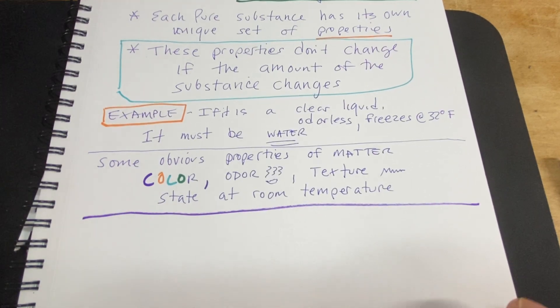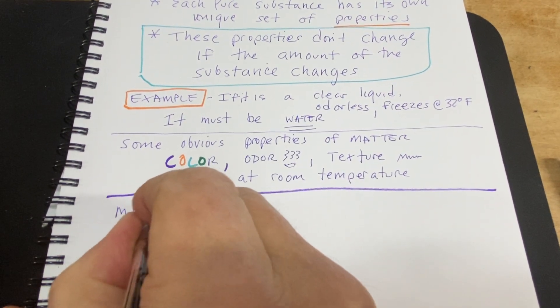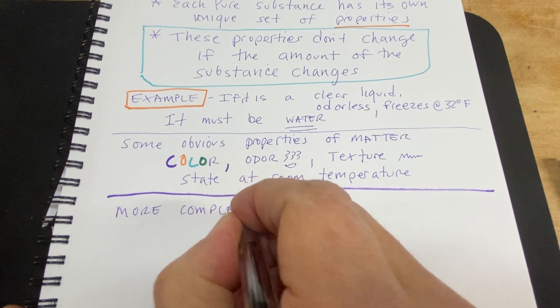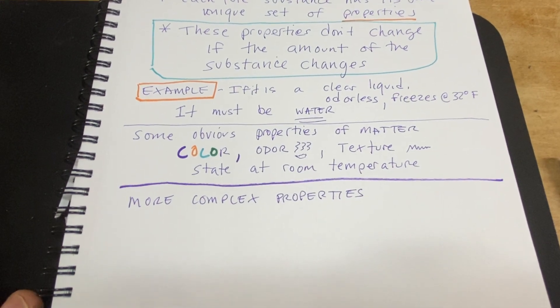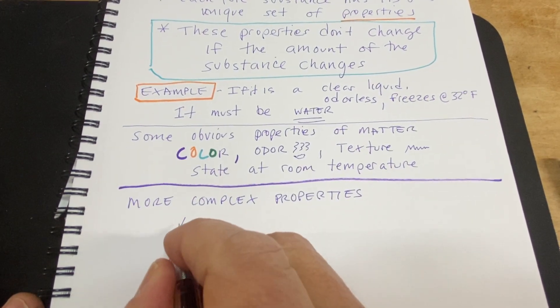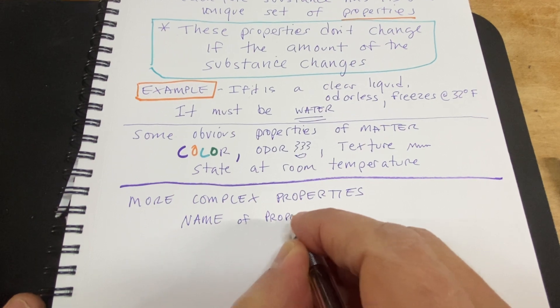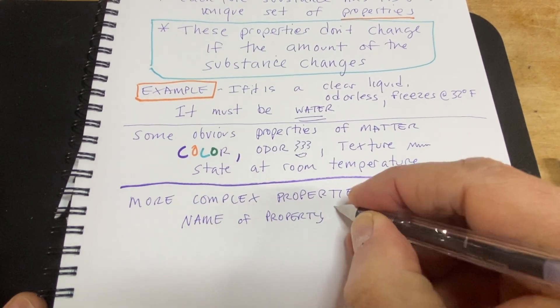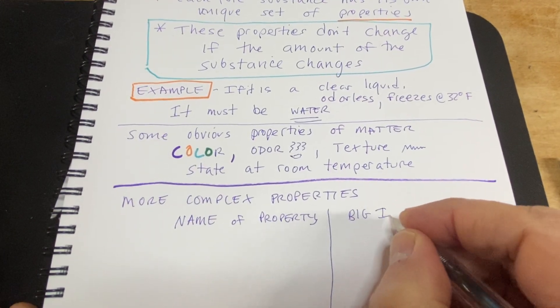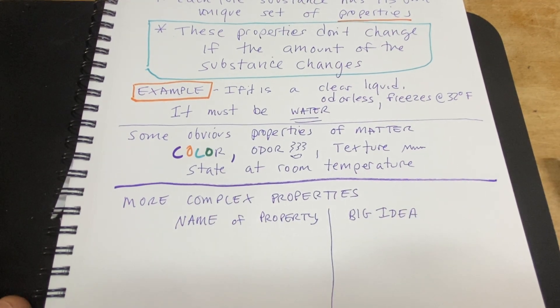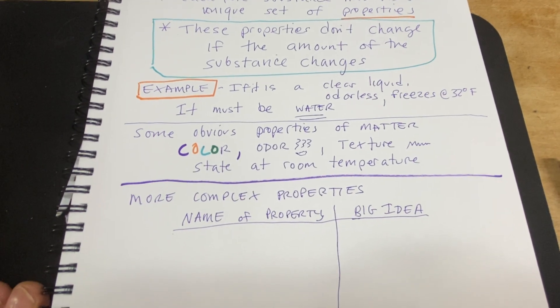Now there are some more complex ones. Examples of more complex properties would include the thing we looked at earlier. We're going to make a little table here - name of the property and the big idea, the big chemical idea around what's going on at a particle level. Because usually it has something to do with the particle that makes up this thing.